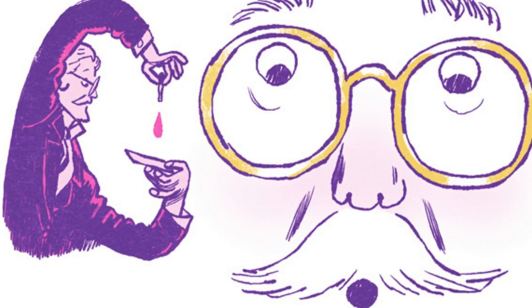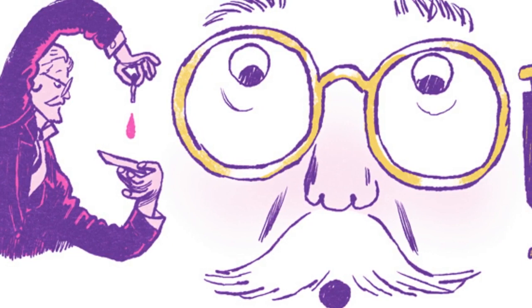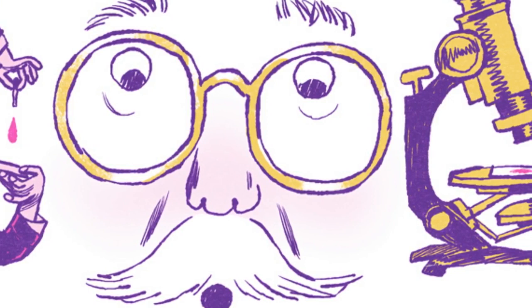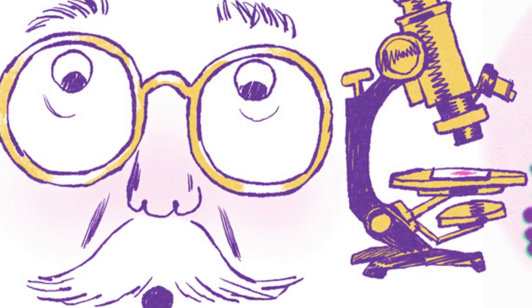Hans Christian Gram was born in Copenhagen on this day in 1853. After earning his M.D. from the University of Copenhagen in 1878, Gram traveled through Europe studying bacteriology and pharmacology.